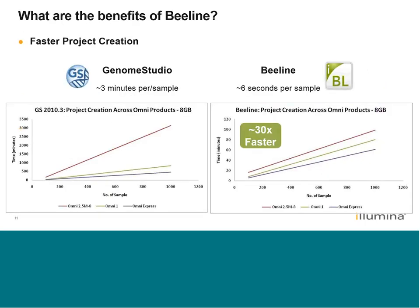What the GTC file format confers as a benefit for Beeline is faster project creation. In a benchmark test comparing Genome Studio versus Beeline, for some products you can actually get almost 30 times faster project creation in terms of loading each sample in Beeline versus Genome Studio. What that could look like is — if you have a project that would normally take a day to create in Genome Studio — it could potentially take about an hour in Beeline. Definitely lots of time savings given by using the GTC file format.